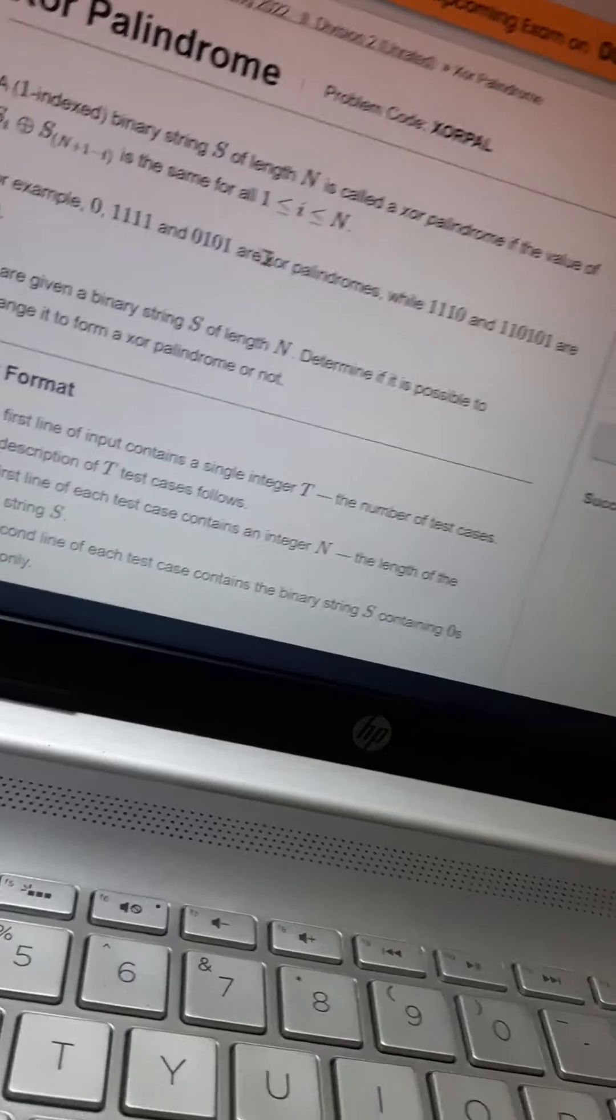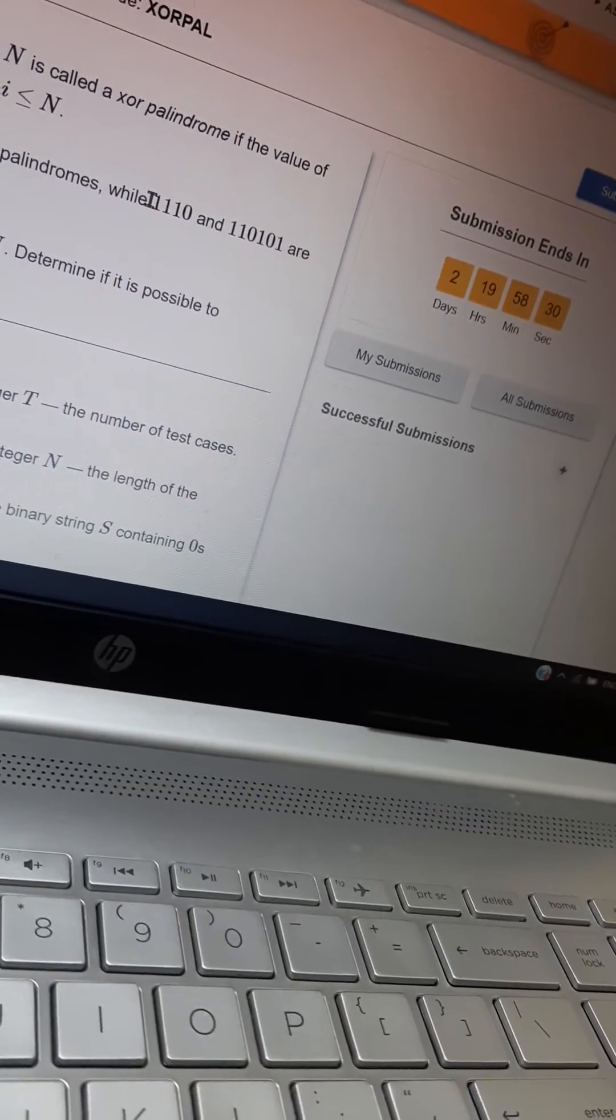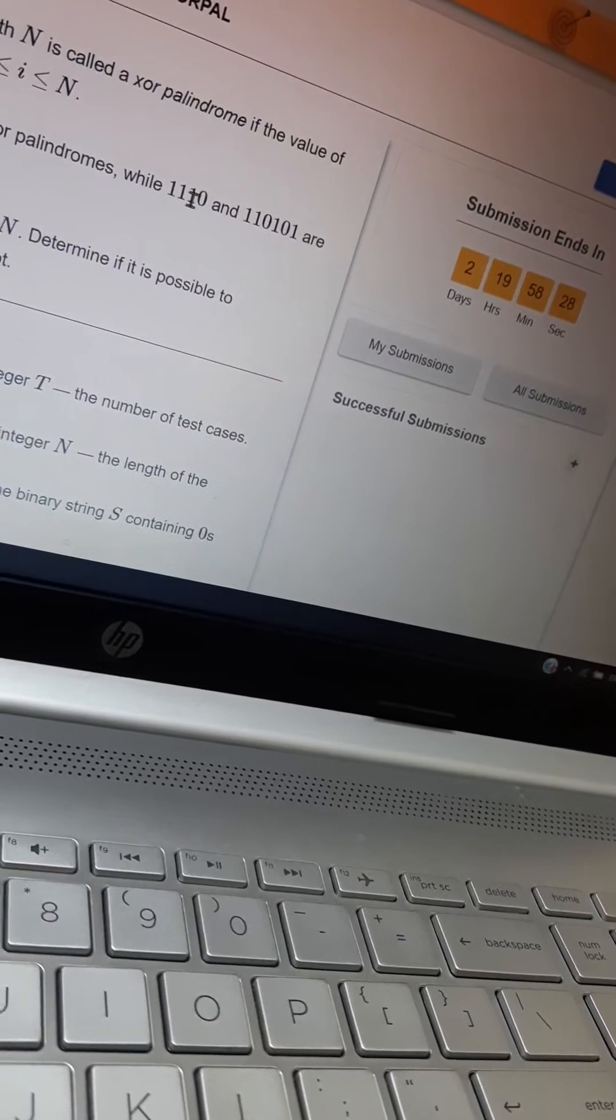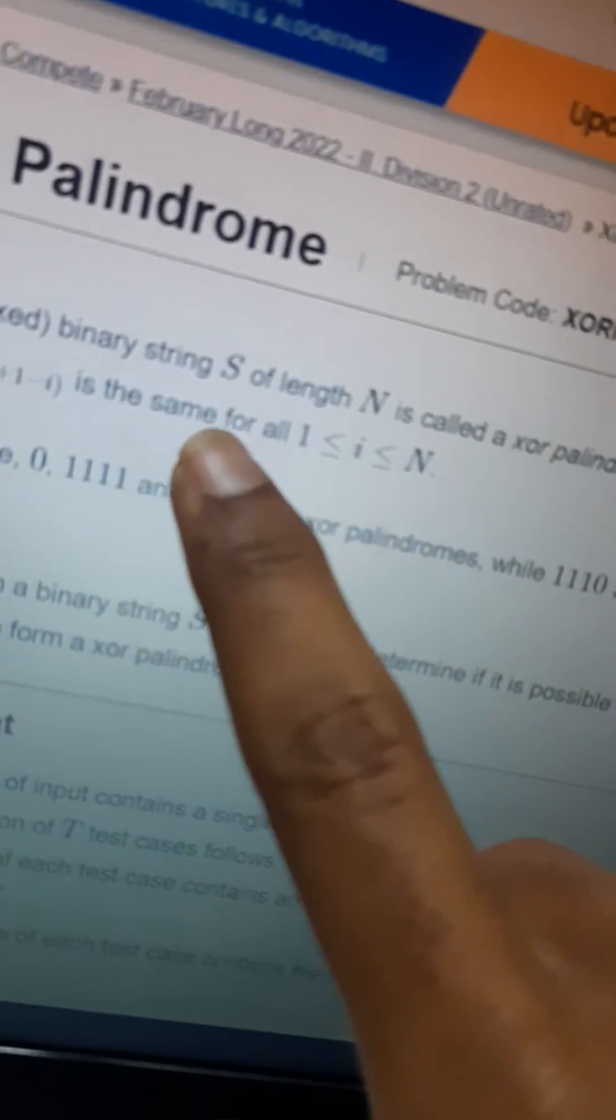When we come here, for 10: one and one is 0, but one and zero is 1. So it is not an XOR palindrome - it should be same for all cases in the given string.